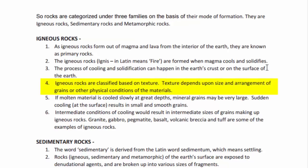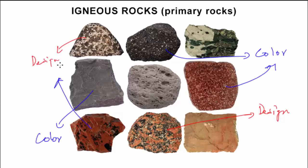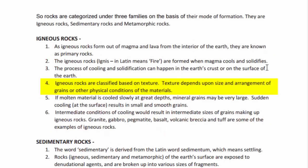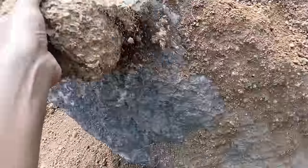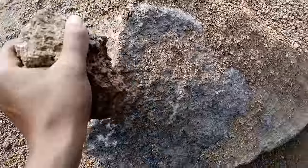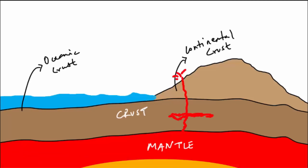Igneous rocks are classified based on texture — the color as well as design pattern. This texture depends upon the size and arrangement of grains or other physical conditions of the materials. The external shape depends upon the molecular arrangement of crystals within. If molten material is cooled slowly at greater depths, mineral grains may be very large. Sudden cooling at the surface results in small and smooth grains.